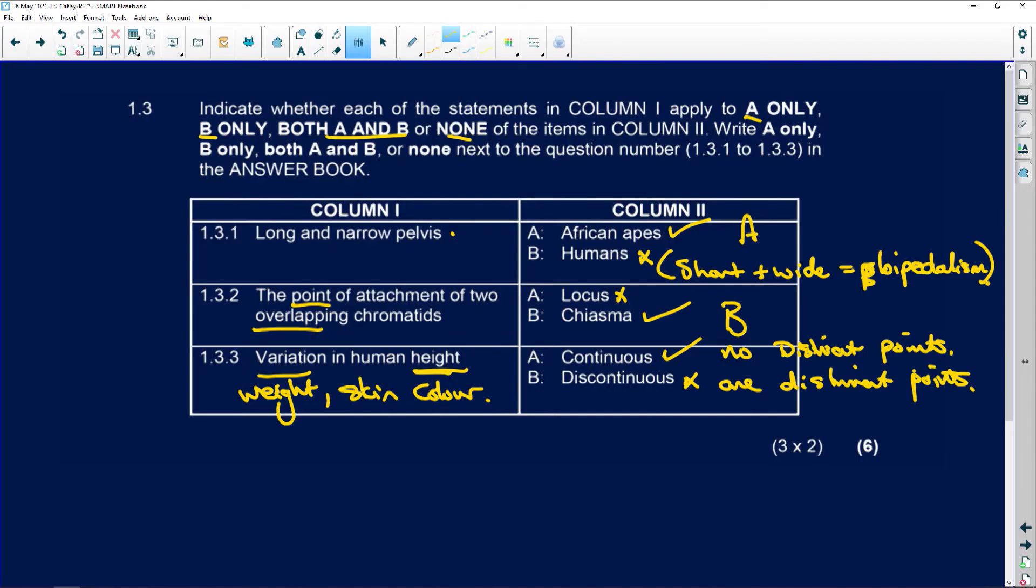Discontinuous would be, and just think, discontinuous for distinct. So distinct variation, discontinuous. Continuous variation, there is no distinction. It just carries on.